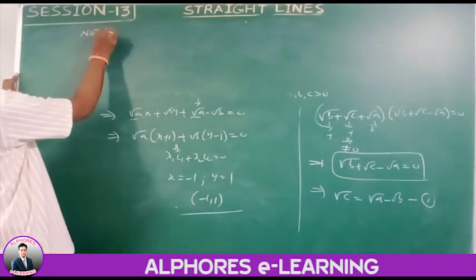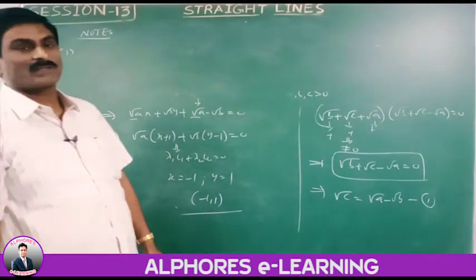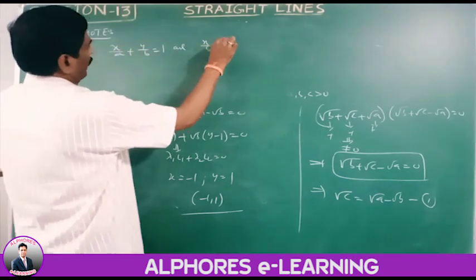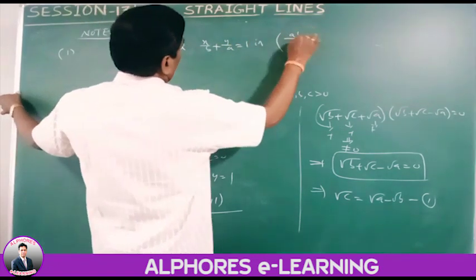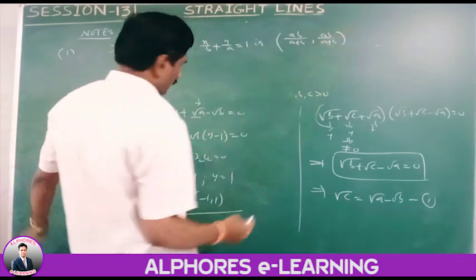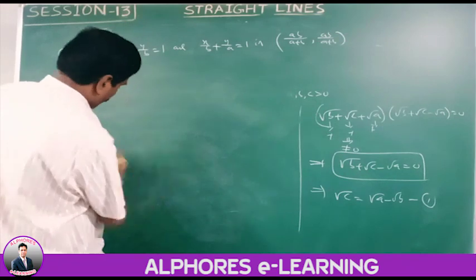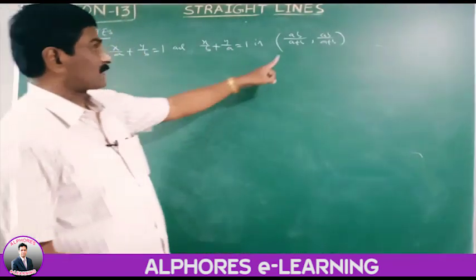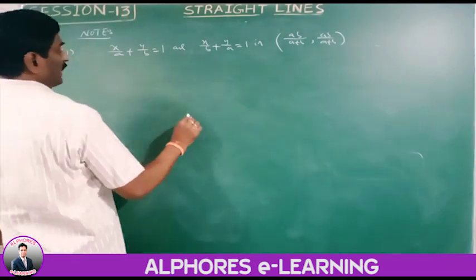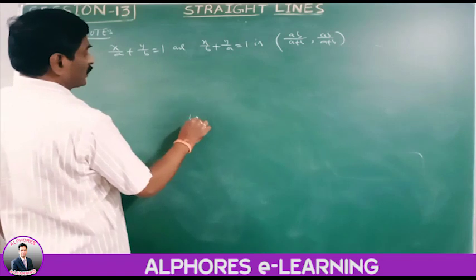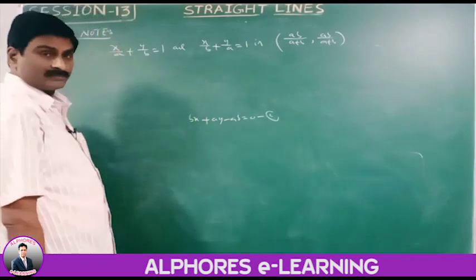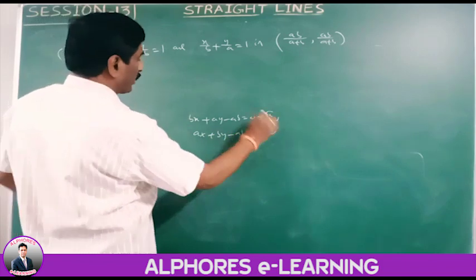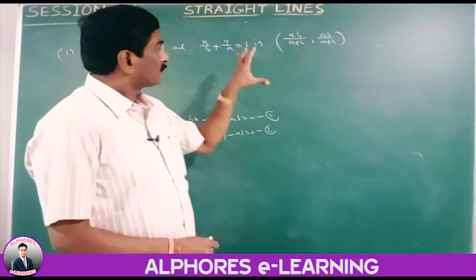Note point: the point of intersection of the lines x/a plus y/b equals 1 and x/b plus y/a equals 1 is (ab/(a+b), ab/(a+b)). After taking LCM, line 1 becomes bx plus ay minus ab equals 0, and line 2 becomes ax plus by minus ab equals 0. Solve these by cross multiplication to prove this result.